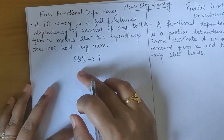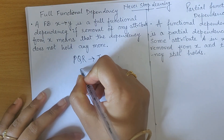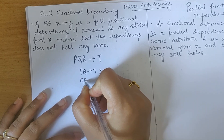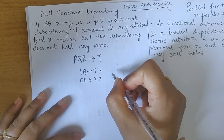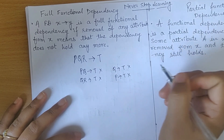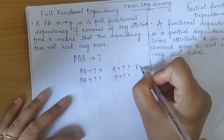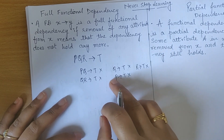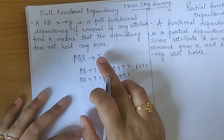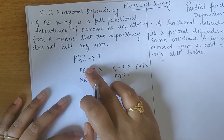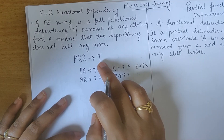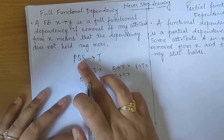This means there should not be any dependency like PQ determines T, QR determines T, Q alone determines T, P determines T, or R determines T. Any subset of PQR should not be able to determine T alone. Only with the full combination PQR together will we be able to determine T — then we say T is fully functionally dependent on PQR.